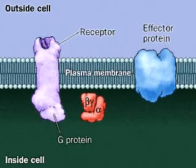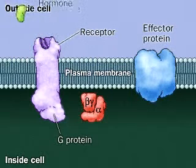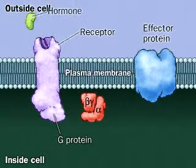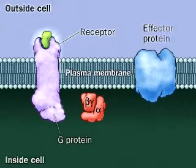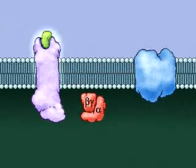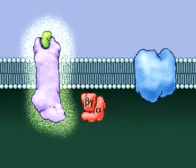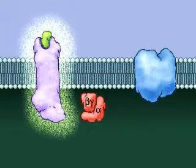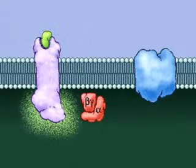When an external signal such as a hormone binds a receptor protein on the plasma membrane, the receptor molecule undergoes a change that causes a G-protein to bind it to the inside of the cell.